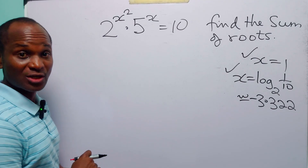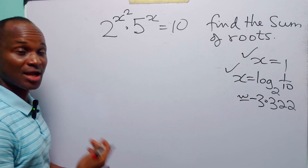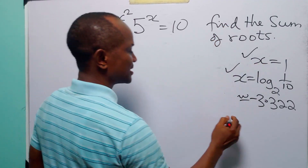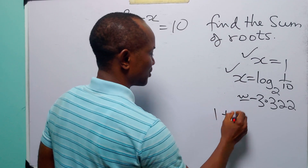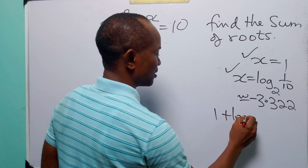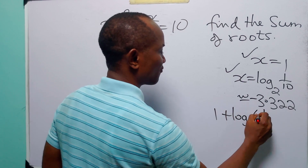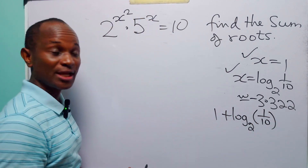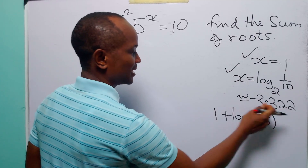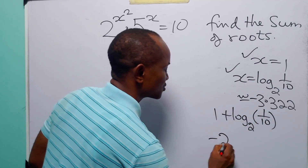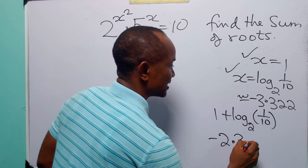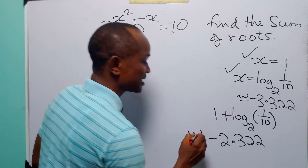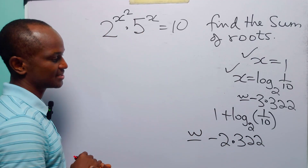Now that we have both values of x, the sum of the roots of this exponential equation is 1 plus log to base 2 of 1 over 10. Or, if you want it in decimal, it is approximately minus 2.322.